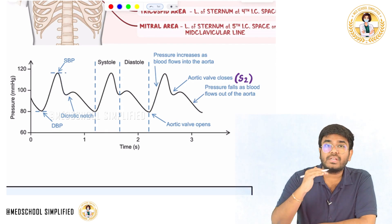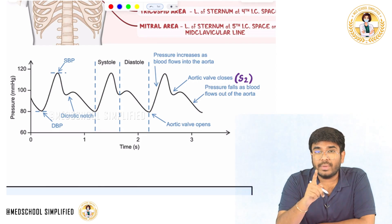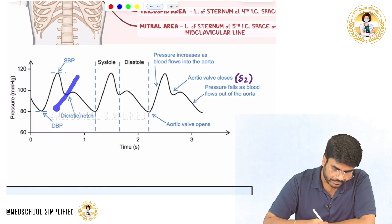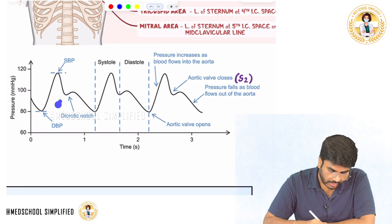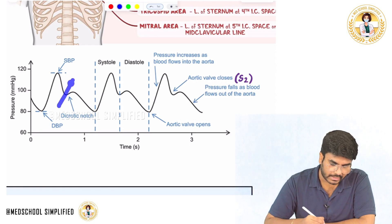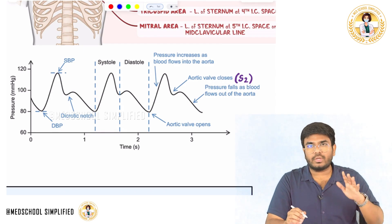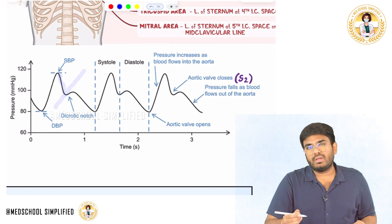When the pressure is decreasing in your left ventricle, which valve will close? The aortic valve closes. This is the exact time the aortic valve is closed. When the ventricular pressure is decreasing, the aortic pressures are also decreasing. This is the exact point — the aortic valve will close.